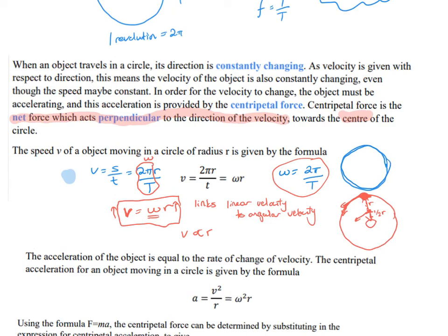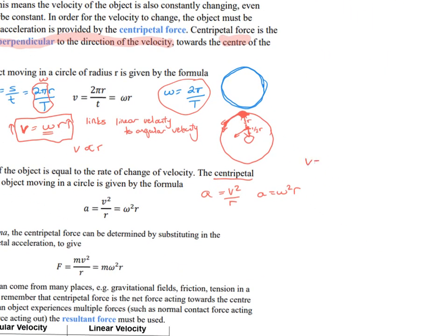We can also link acceleration to angular velocity. Centripetal acceleration a = v²/r. Substituting v = ωr gives a = (ωr)²/r = ω²r²/r = ω²r. So there are two expressions for centripetal acceleration: a = v²/r and a = ω²r, depending on whether you're given linear or angular velocity. Both are given in the formula booklet.